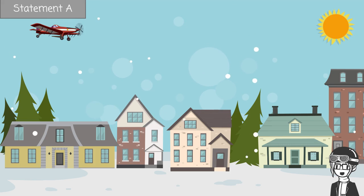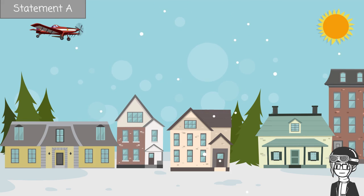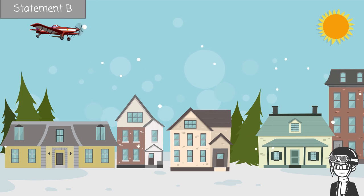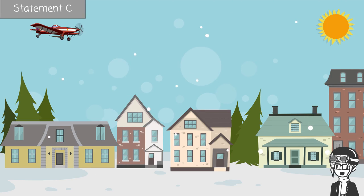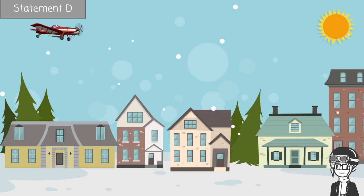Statement A: there are storm clouds on the horizon. Statement B: a plane is flying over the town. Statement C: it is raining. Statement D: there are trees in front of the houses.